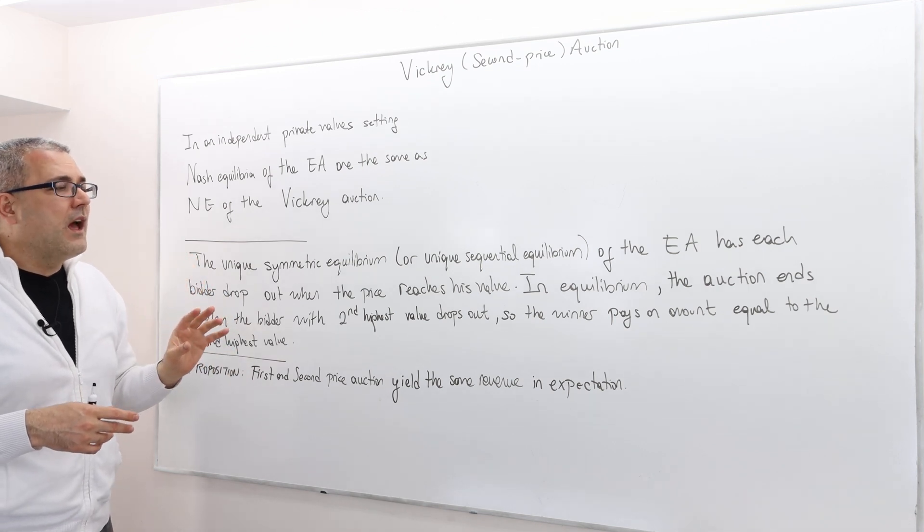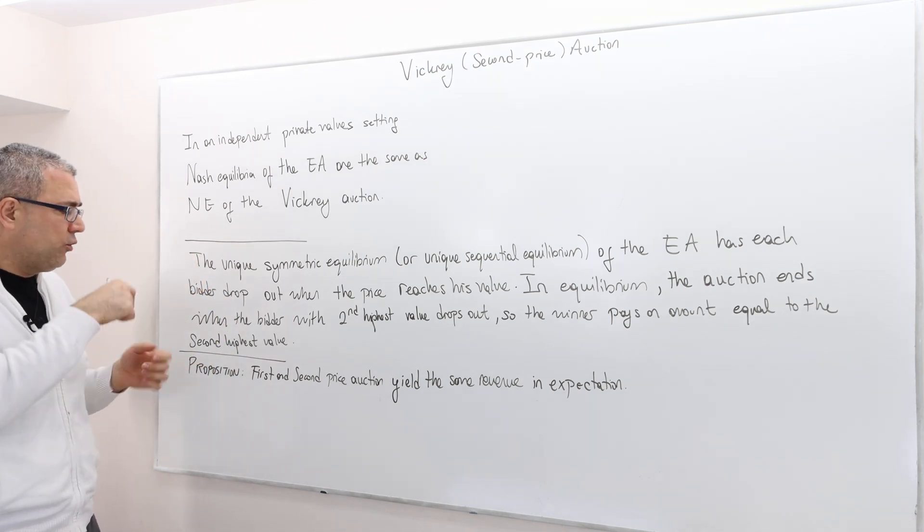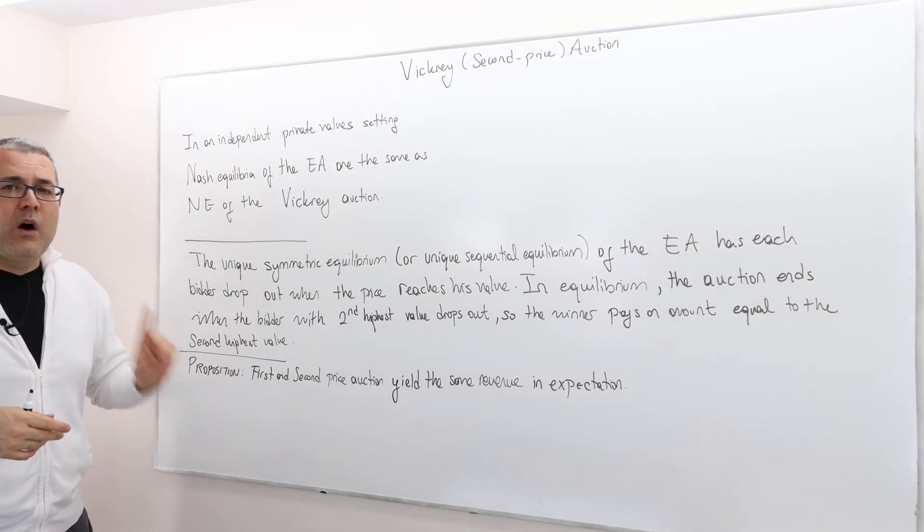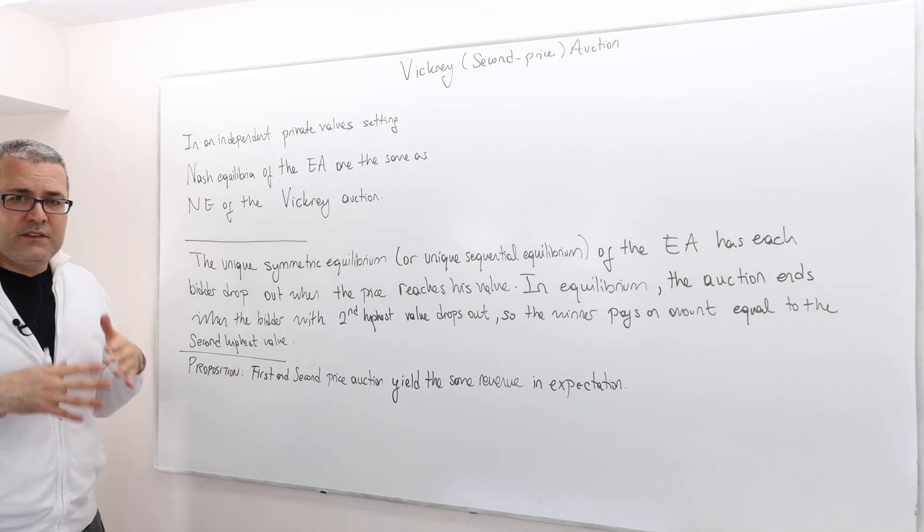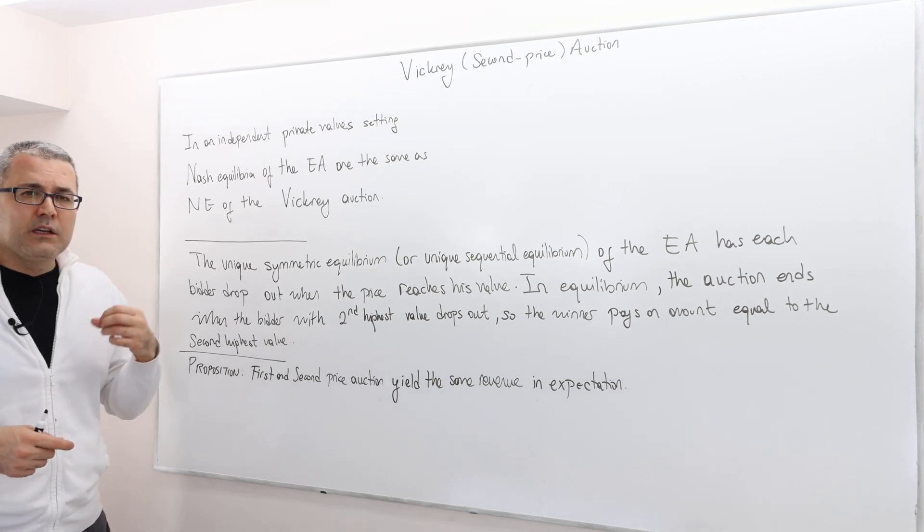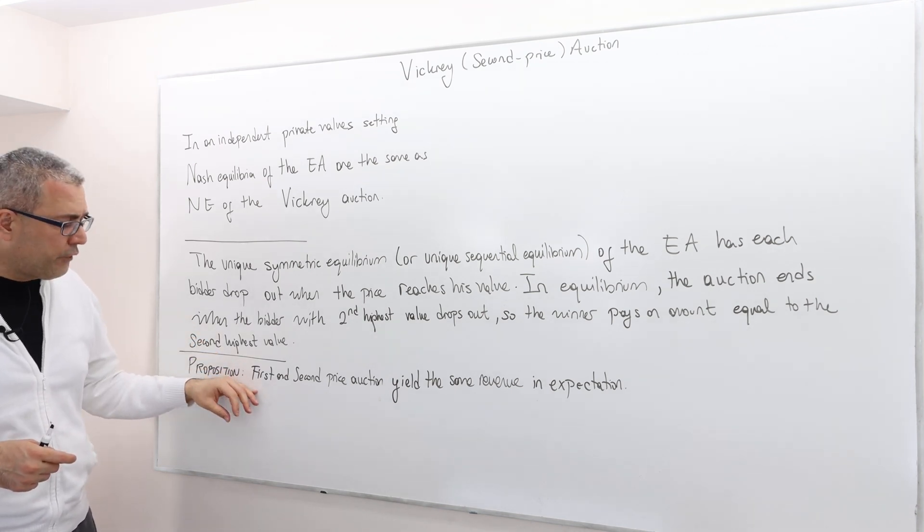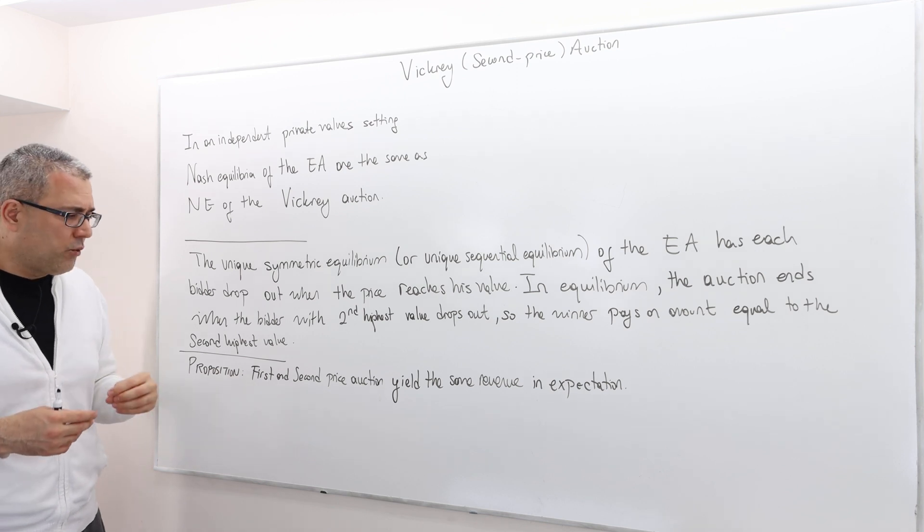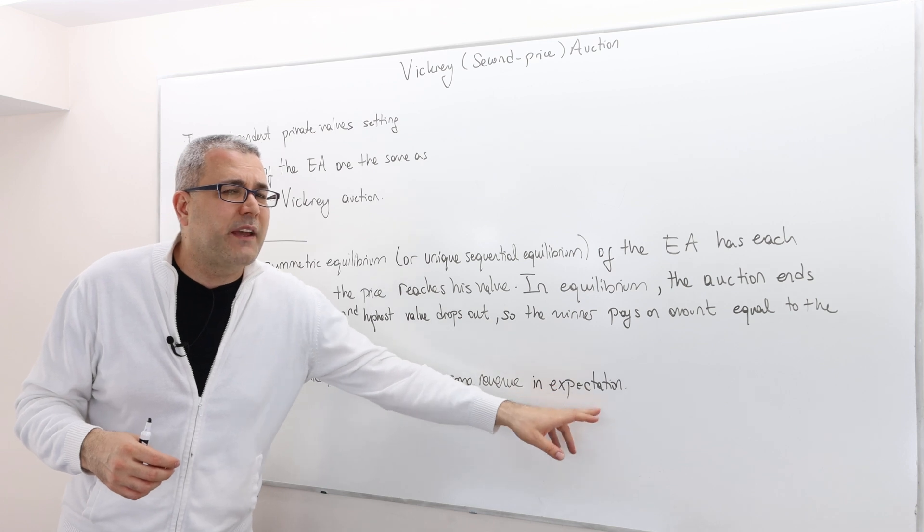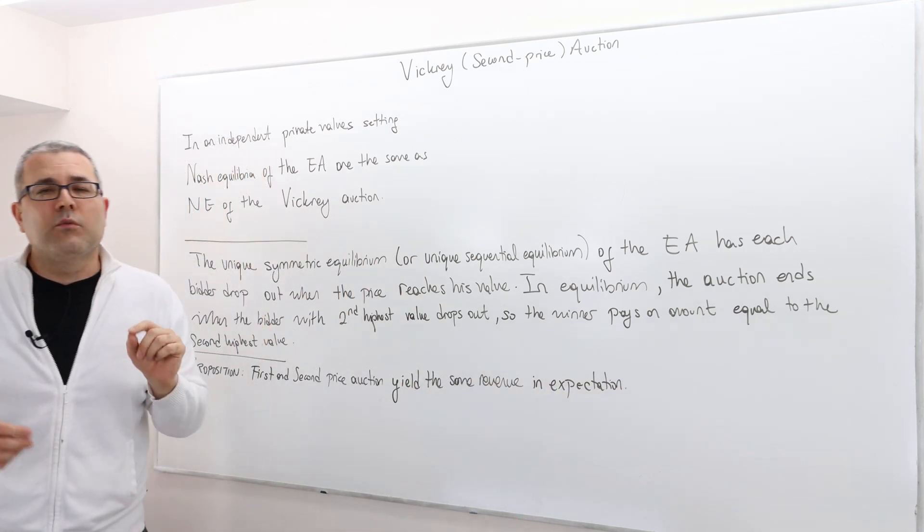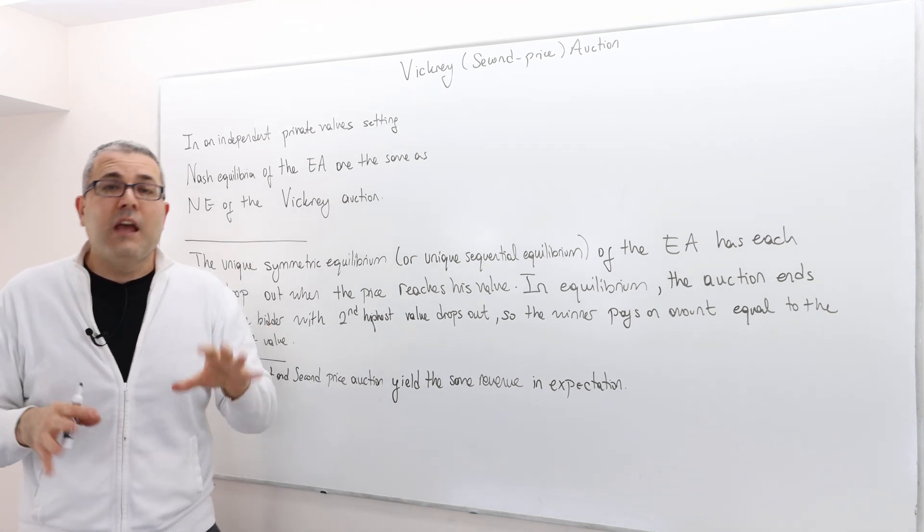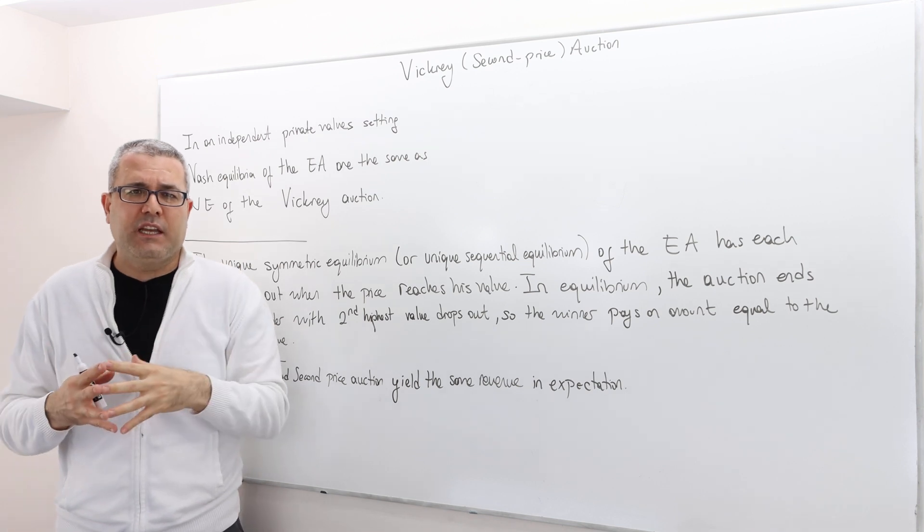And so the winner pays an amount equal to the second highest value. So one final thing is the following note, which is a very important conclusion. The first and the second price auctions yield exactly same revenue in expectation. So what does that mean? That means if you are an auctioneer, if you want to run an auction, again, under independent private value setting.